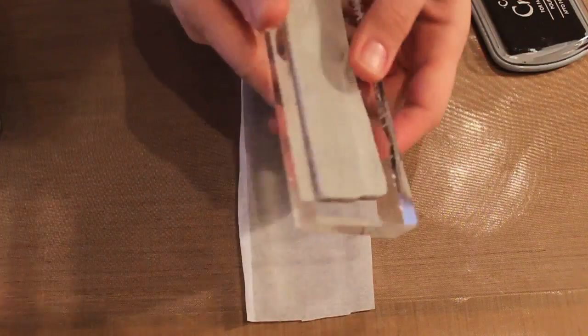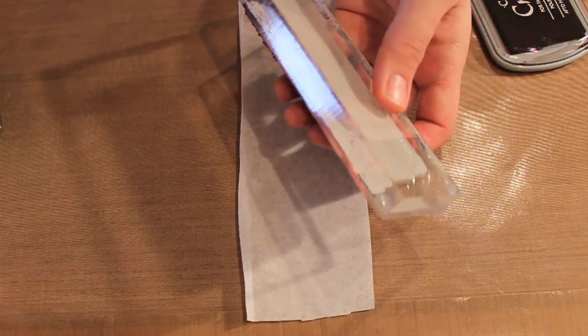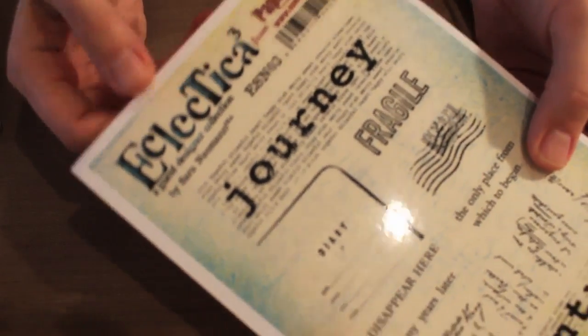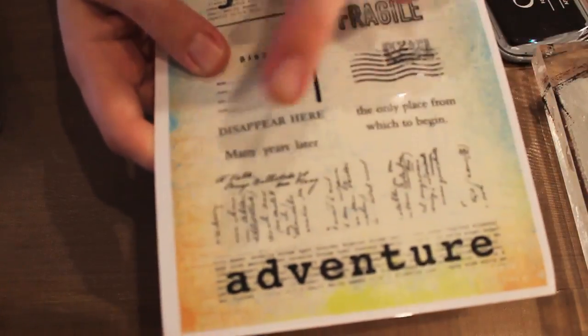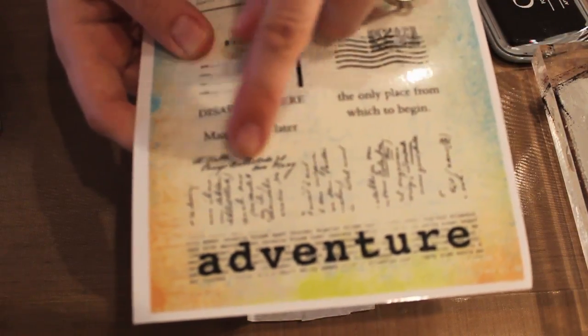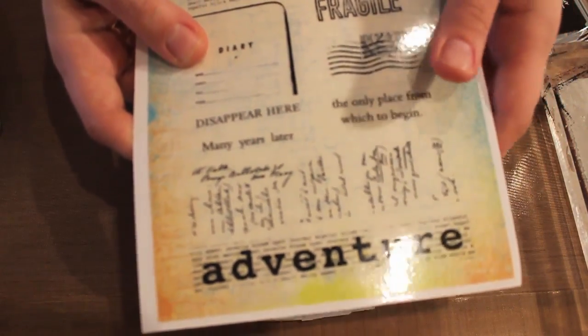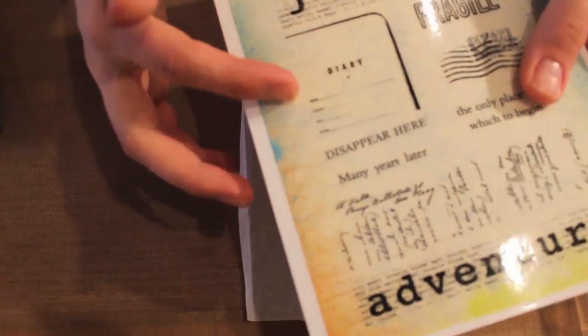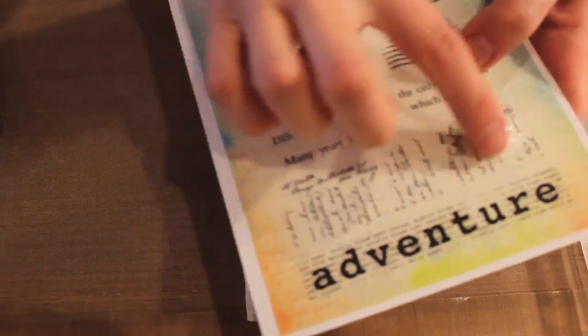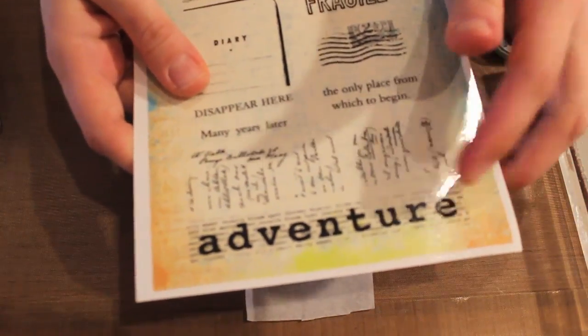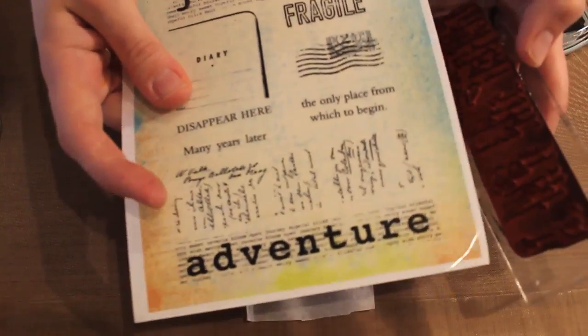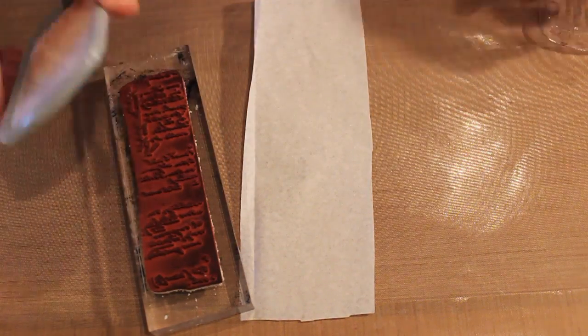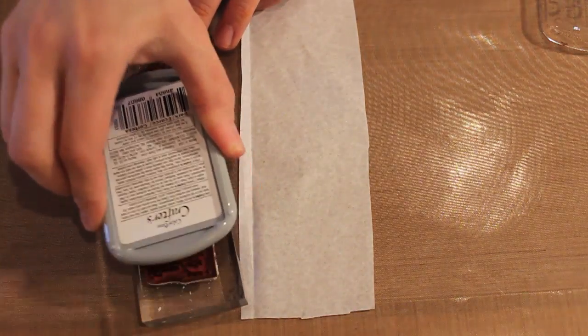So the stamp that I'm using is from a set from Paper Artsy and this is the Eclectica ESN 03. And I want this design right here, this lovely script text. Border stamps tend to do better for this technique than say a square or something like that because you're going to be cutting in a narrow shape. This is actually an old letter that I found at a flea market in Amsterdam. So it's a beautiful old-fashioned script.